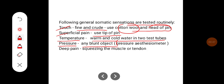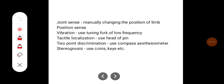Pressure is tested by any blunt object or it can also be tested by a pressure aesthesiometer. Deep pain is usually tested by squeezing the muscle or tendon. Joint sense and position sense are tested by manually changing the position of the limb, whereas vibration is tested using a tuning fork with a low frequency of 128 Hz.